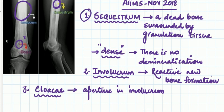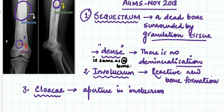Remember: the sequestrum will appear as dense as a normal bone — the density is the same as normal bone, and in fact sometimes it is even denser than the surrounding bone. The cloaca is an aperture in the involucrum.